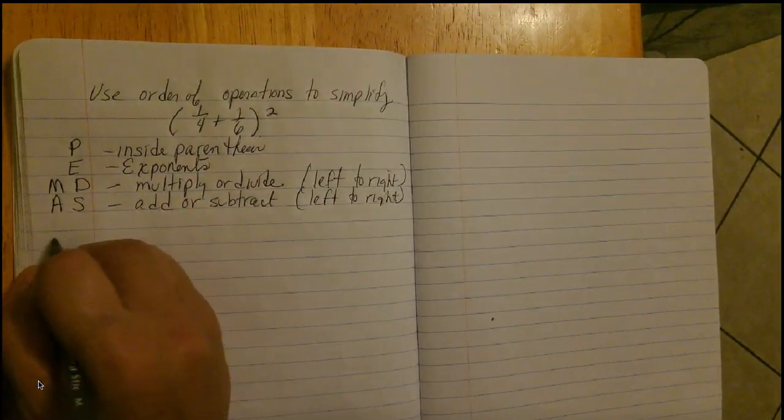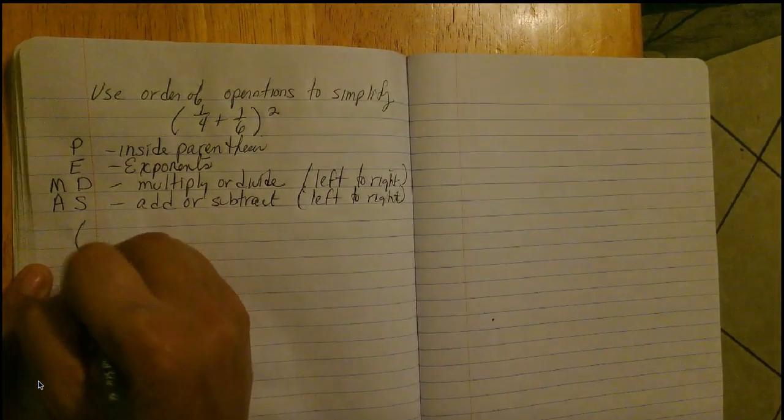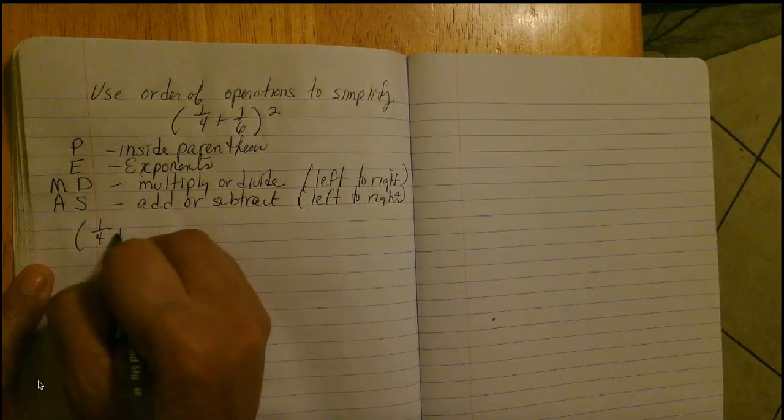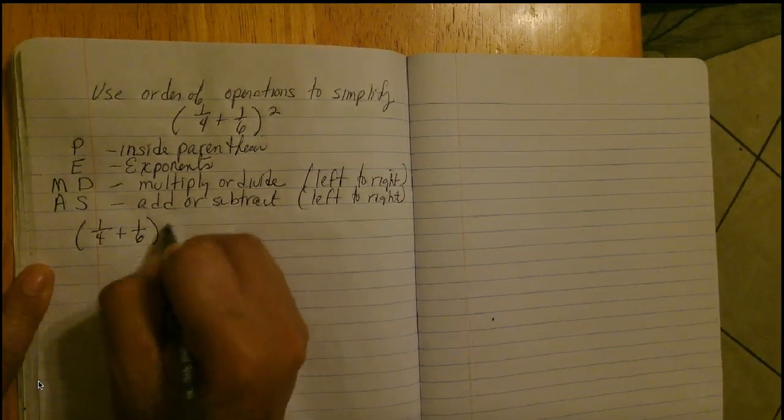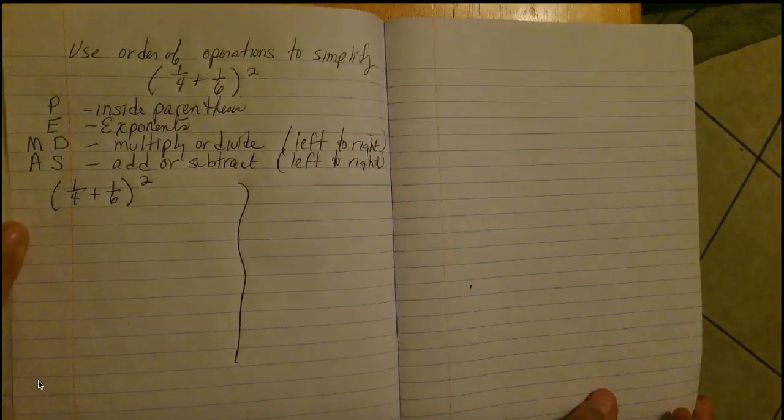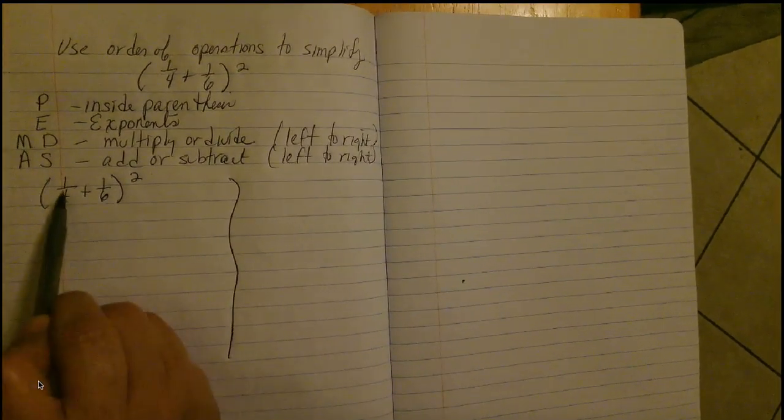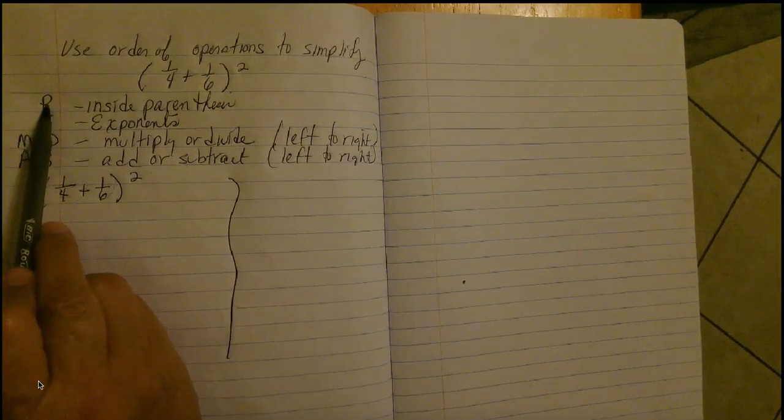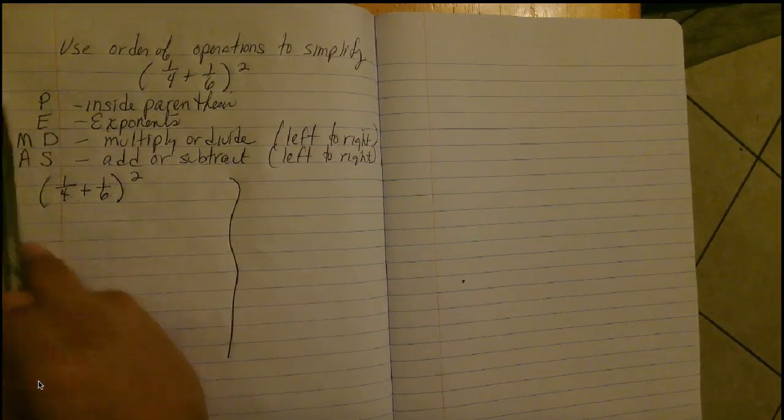Okay, over here on the left side of my paper, I'm going to copy the problem. One-fourth plus one-sixth, parenthesis squared. So, let's begin by looking inside our parenthesis, which is the first thing we have to do.